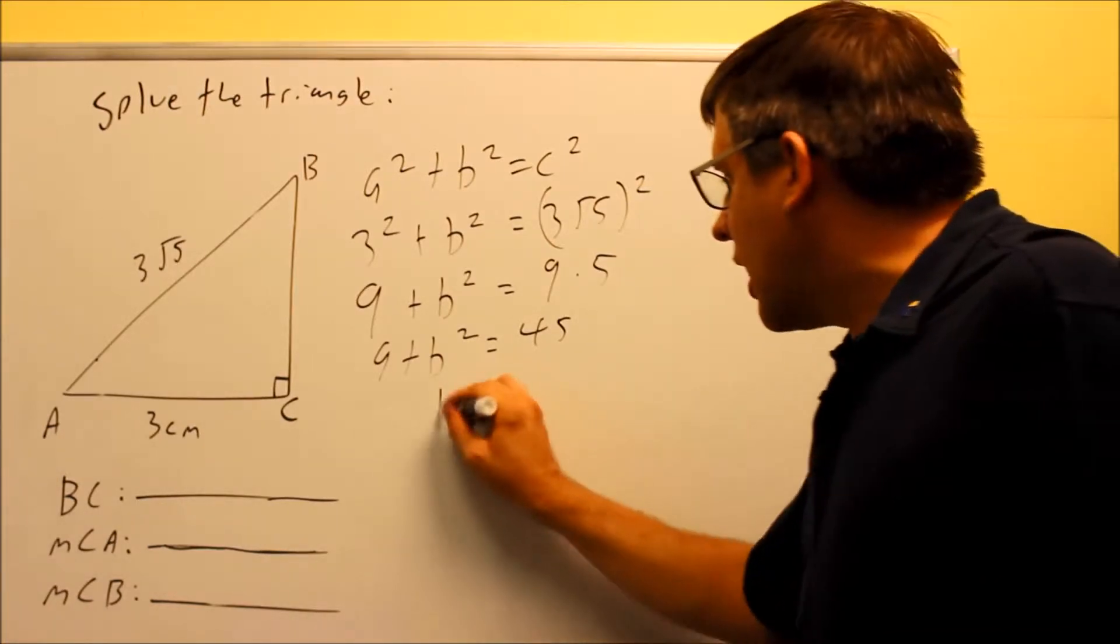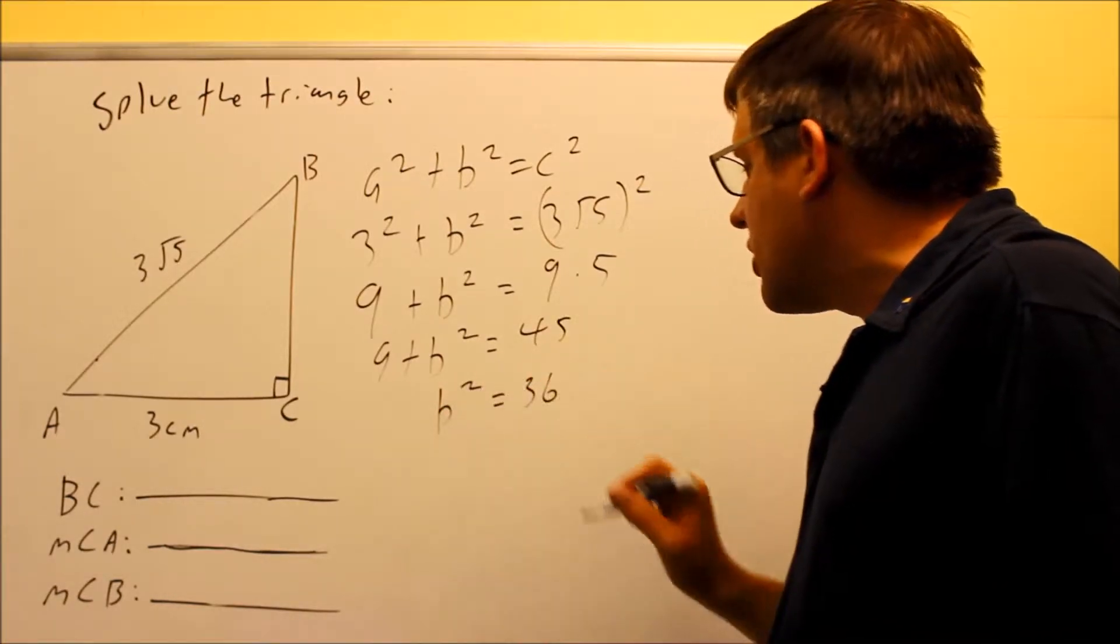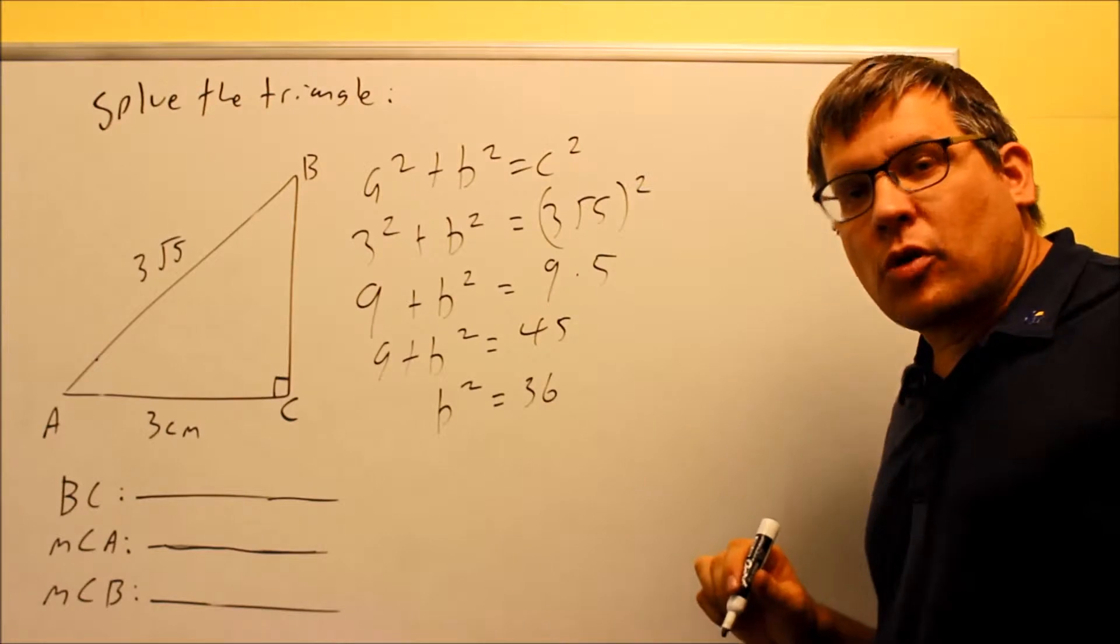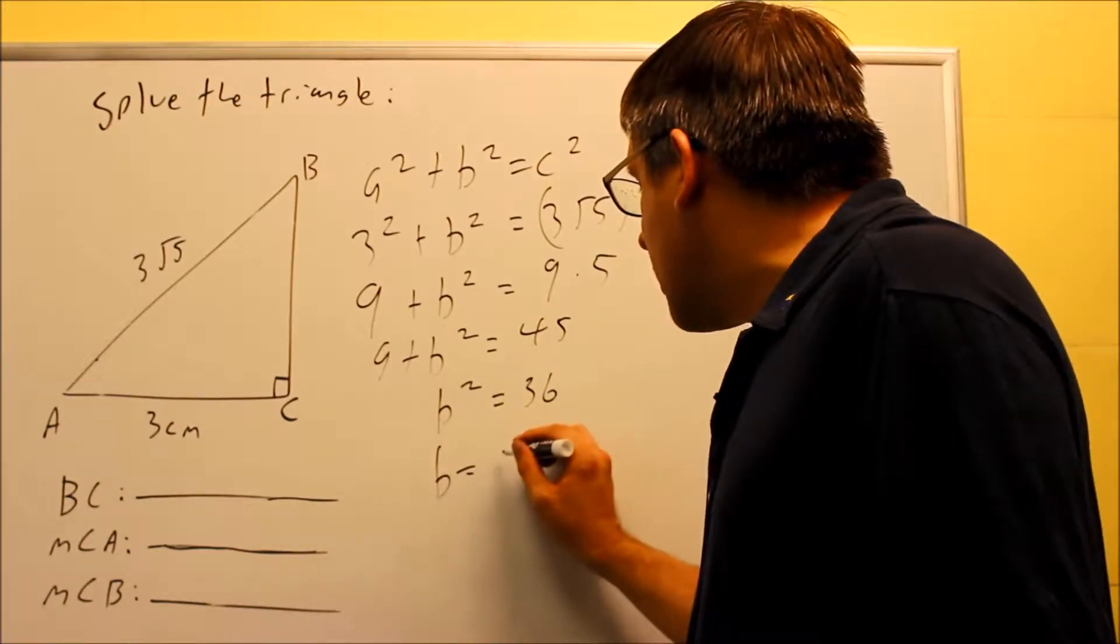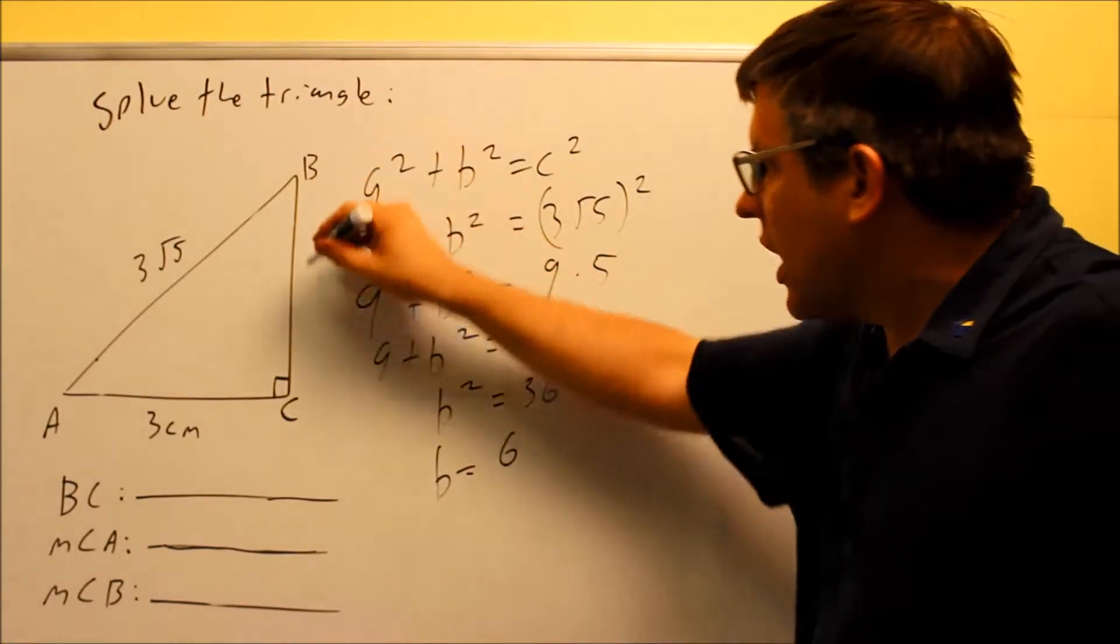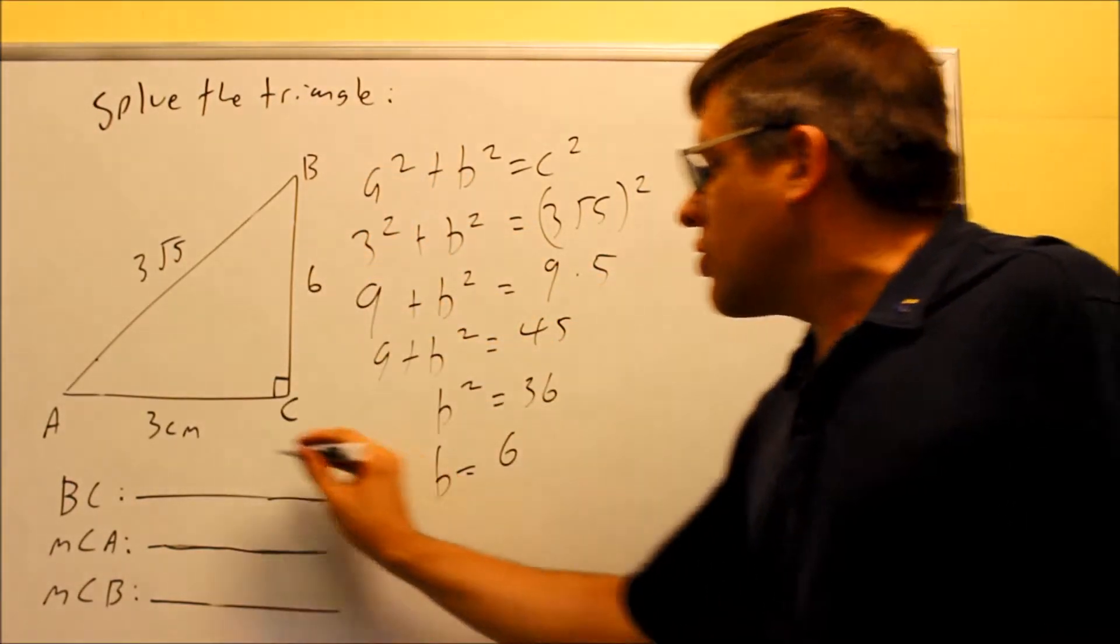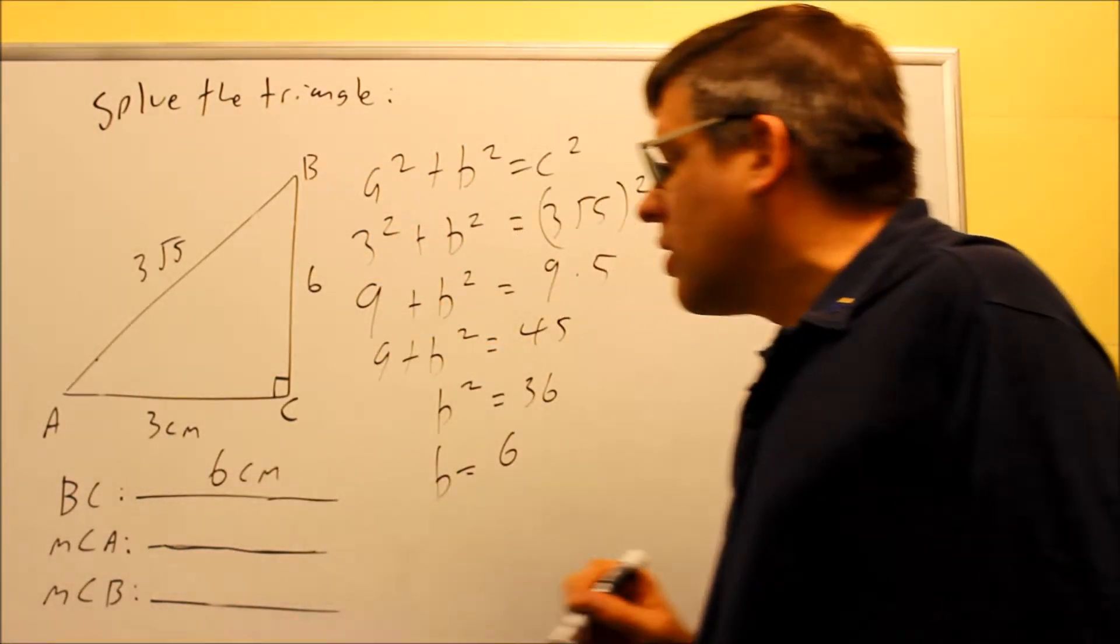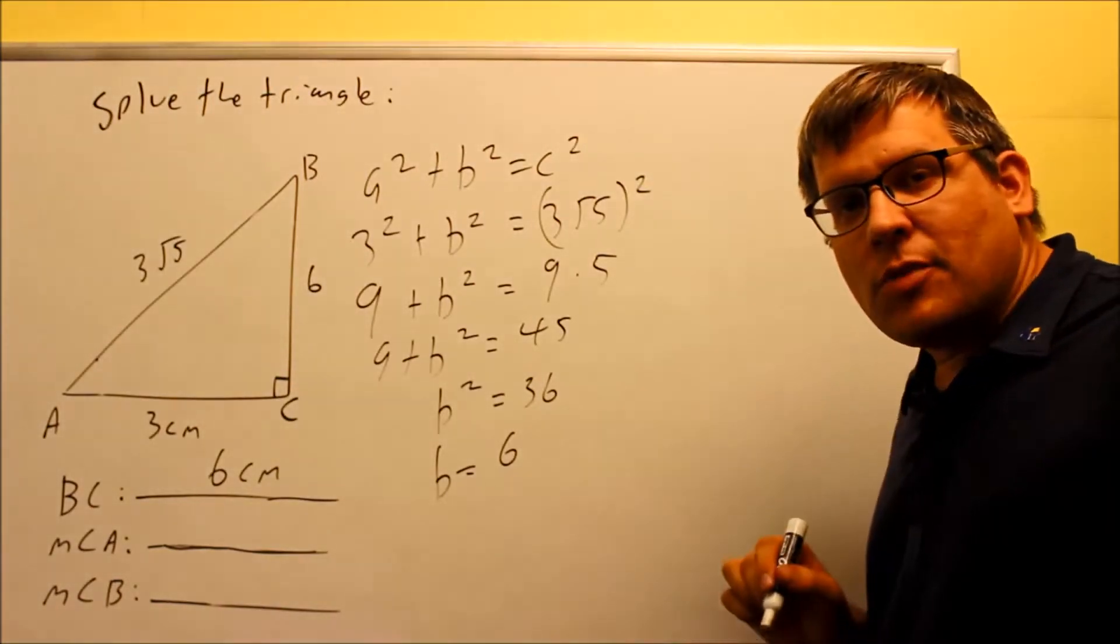We're going to subtract 9 from both sides. B squared is equal to 36, we want to take the square root of both sides. So we get B is equal to, normally it would be plus or minus 6, but in this case because we have a triangle, we're just going to use the positive version so we get 6 centimeters for side BC.